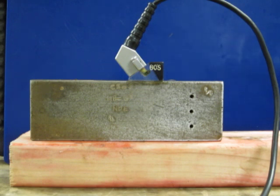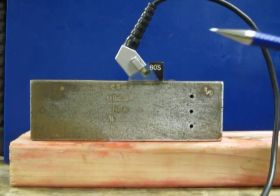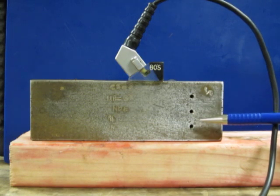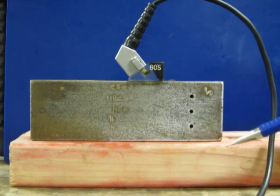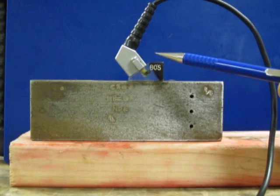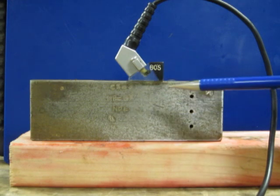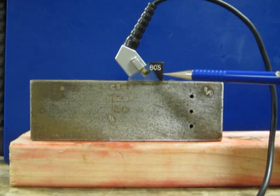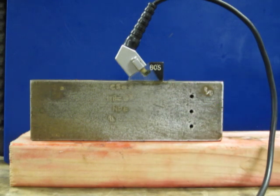Let me give you a quick demonstration of the phased array concept. Here we have a two inch block with three side drill holes at half inch, one inch, and one and a half inches. I have a five megahertz phased array probe here with a nominal refracted angle of 60, but I will be sweeping the beam from 30 degrees to 75 degrees.